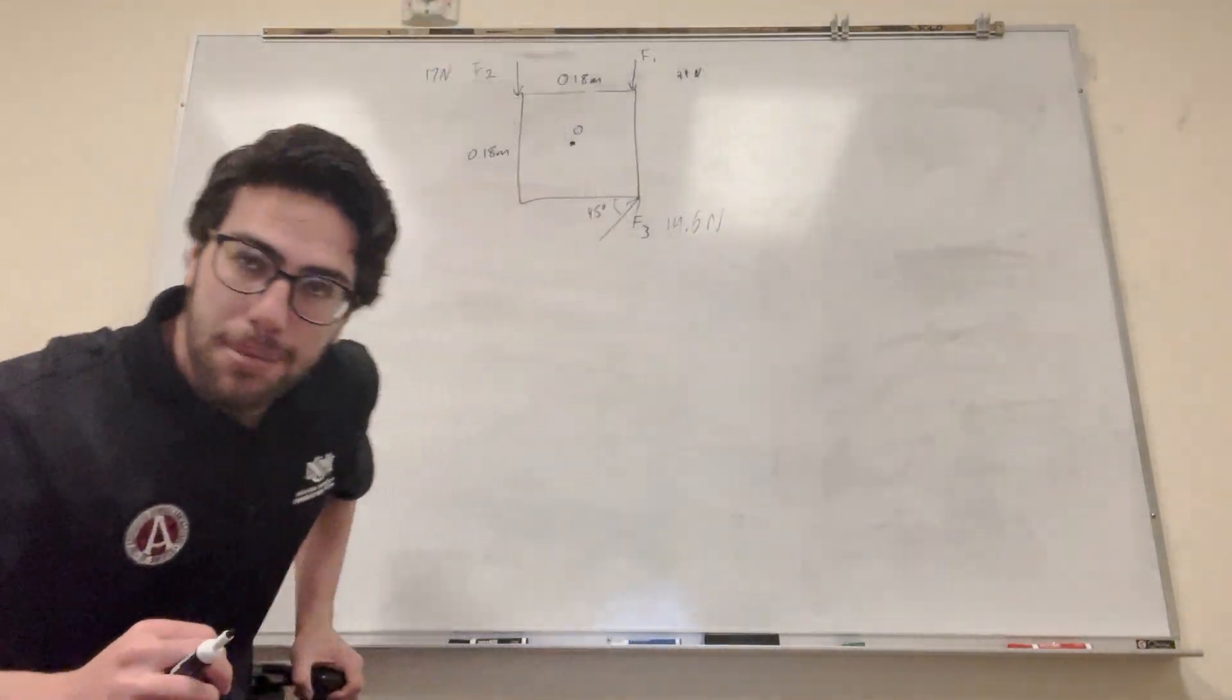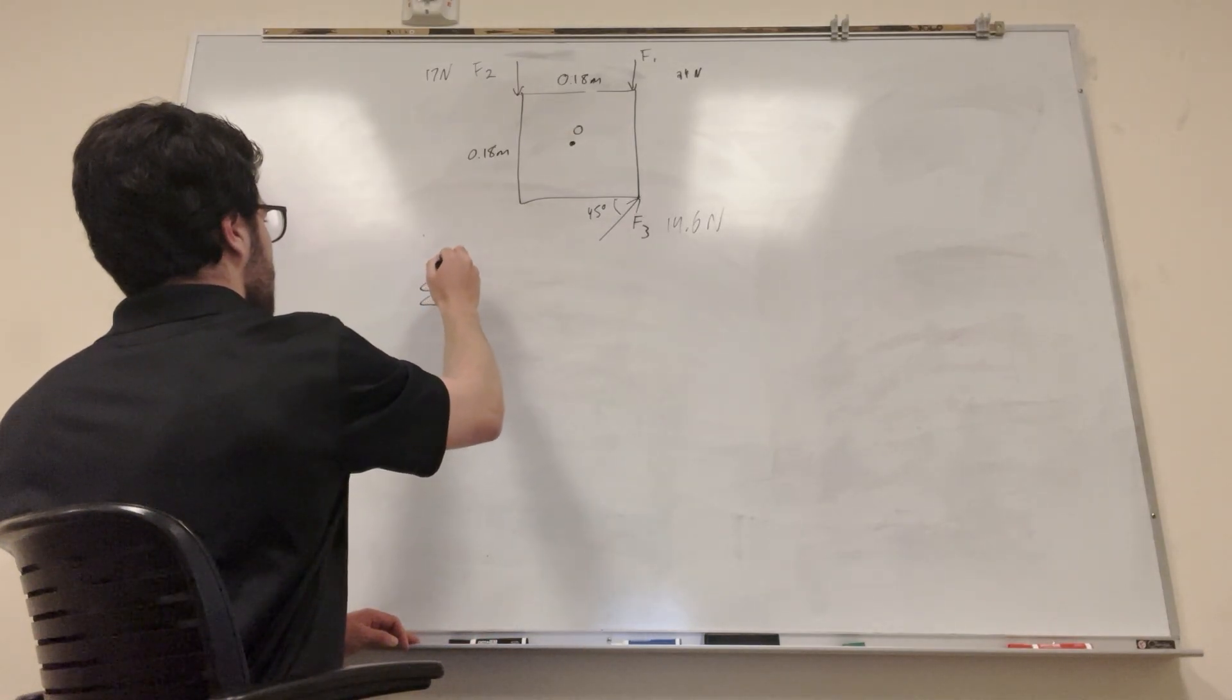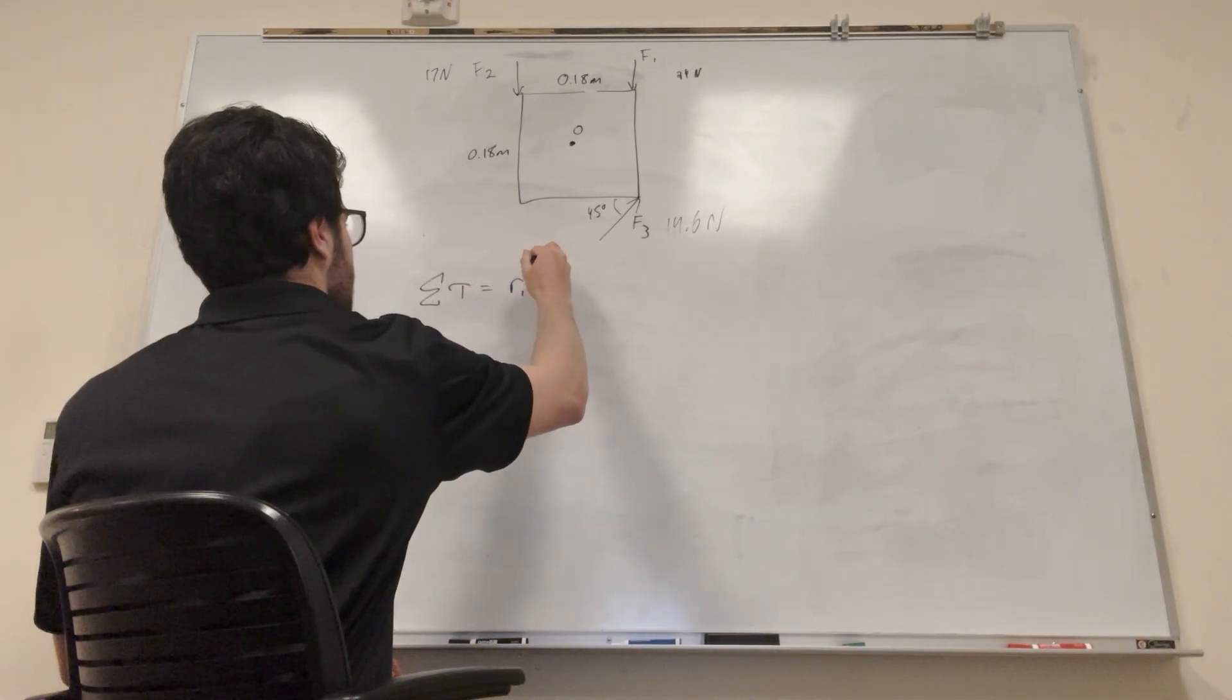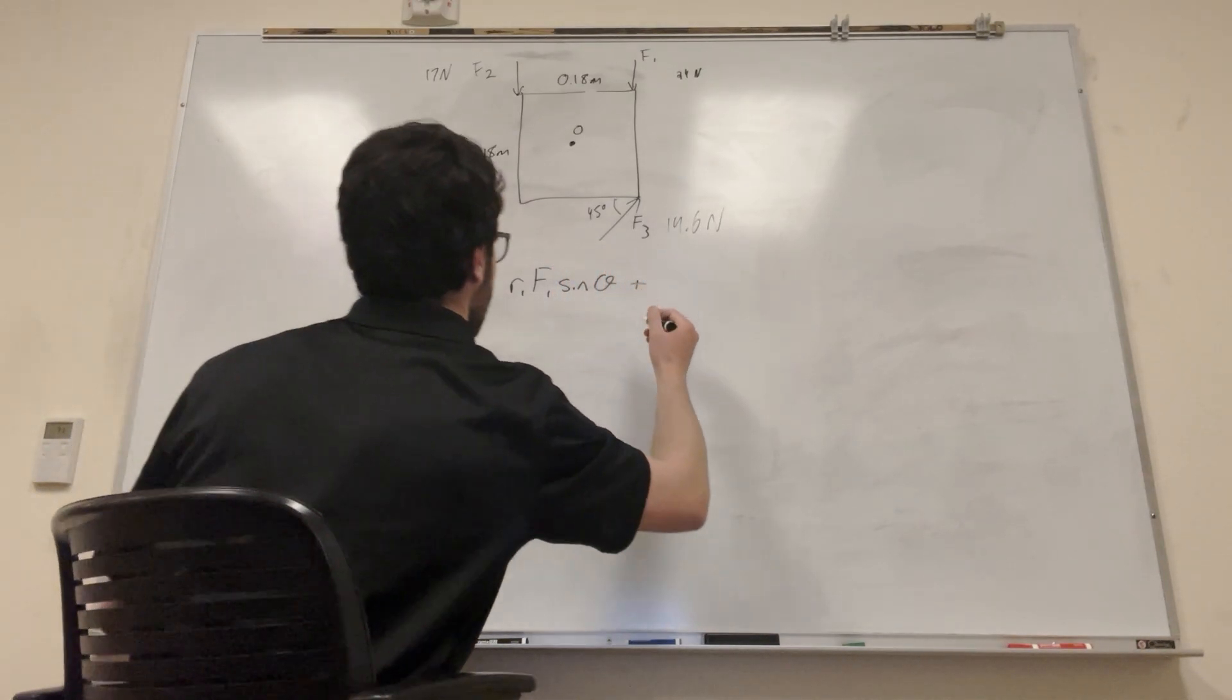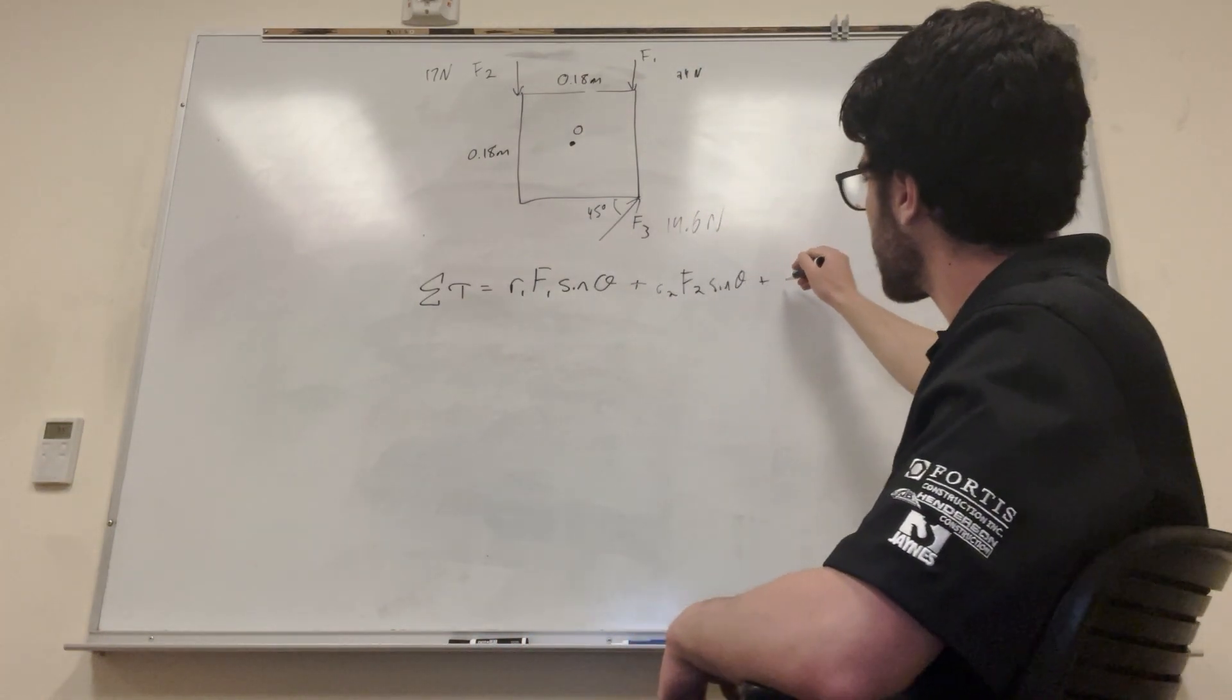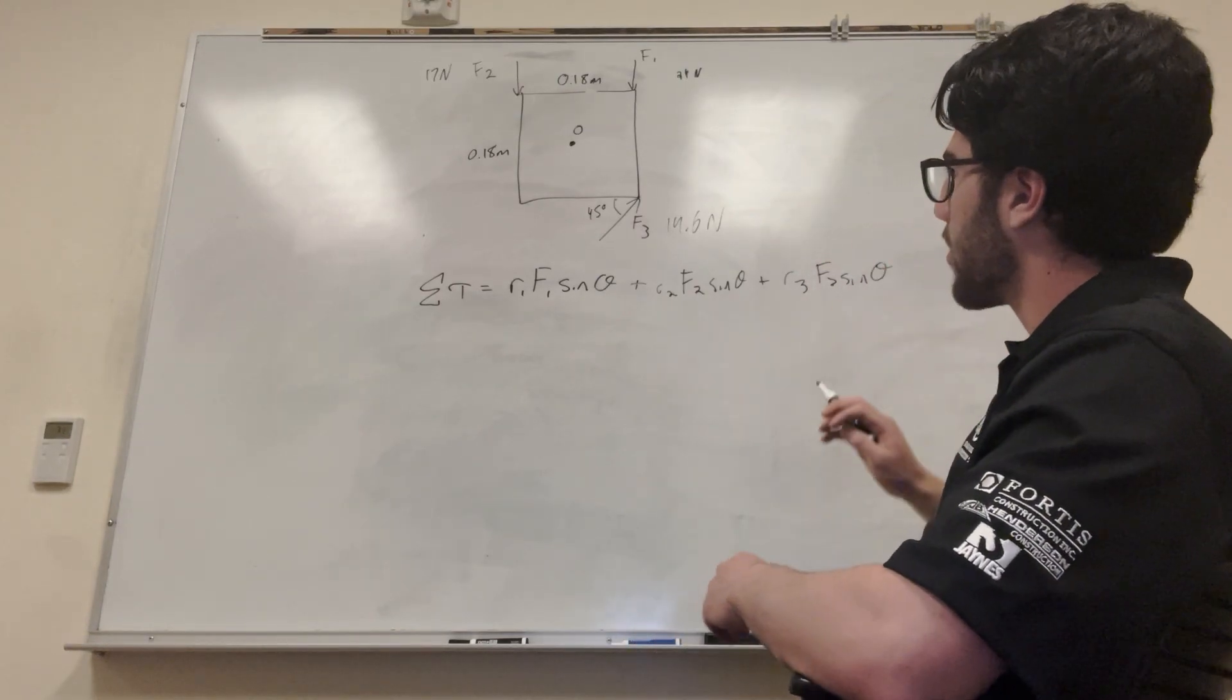Okay, so this one is kind of just a one-step problem. So we know that the sum of the torques is equal to the sum of the torques. Each torque is equal to radius times the force times the sine of theta, plus radius 2 force of 2 sine theta plus radius 3 force of 3 sine of theta. Okay.